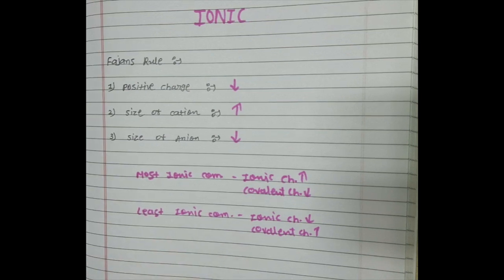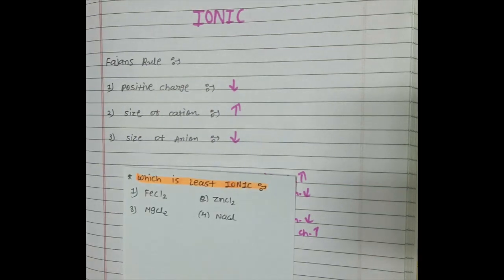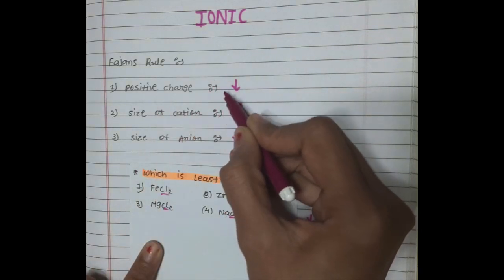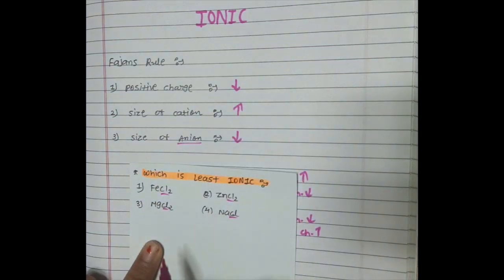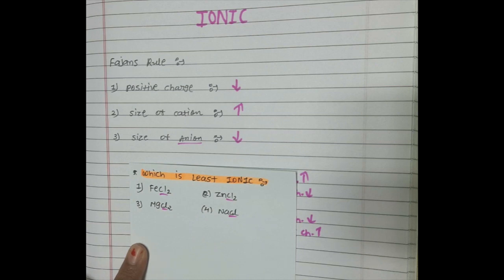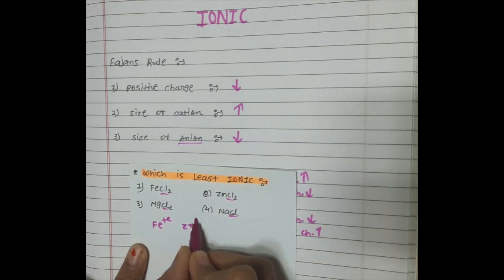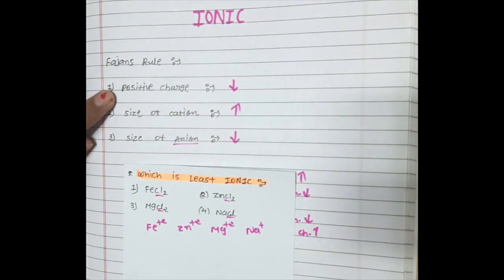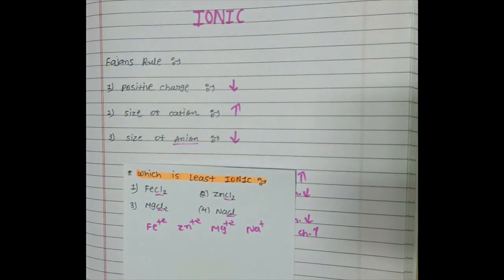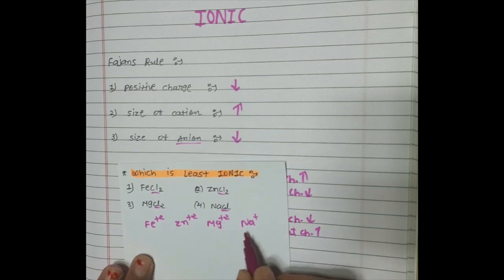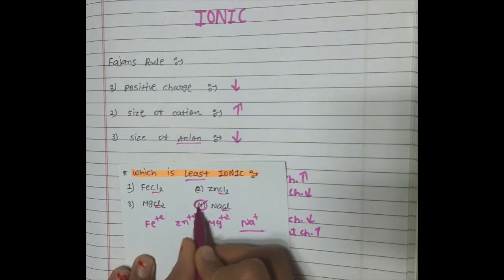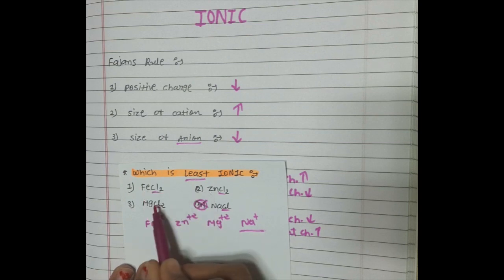For example, consider FeCl₂, ZnCl₂, MgCl₂, and NaCl to find the least ionic. All four Cl anions are the same, so we only discuss positive charge and size of cation. Finding oxidation numbers: Fe is +2, Zn is +2, Mg is +2, and Na is +1. Positive charge less means most ionic — Na⁺ has the least positive charge, so NaCl is the most ionic. Since we need the least ionic, we remove NaCl and consider only Fe²⁺, Zn²⁺, and Mg²⁺.